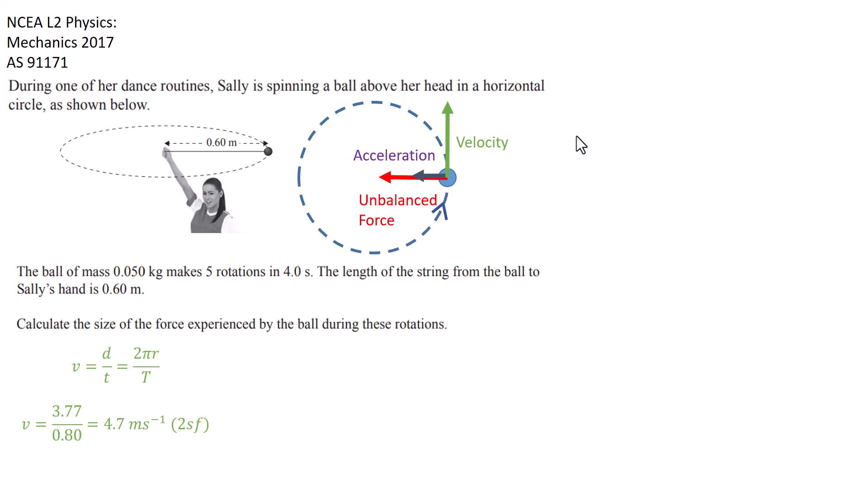We would then use that velocity in the equation Fc, centripetal force, equals mv squared over r. Substitute the numbers in, being really careful here because a lot of people forget to do the squared when they're doing the calculation in the exam. That would leave you with an answer of 1.8 newtons to two significant figures.